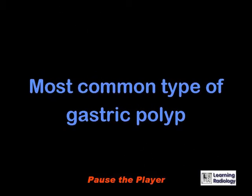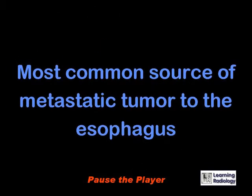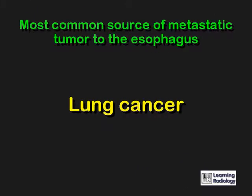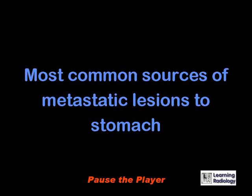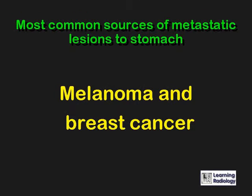What is the most common type of gastric polyp? Hyperplastic or regenerative polyps. What is the most common source of metastatic tumor to the esophagus? Lung cancer. What are the most common sources of metastatic lesions to the stomach? Melanoma and breast cancer.